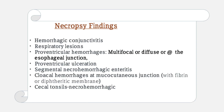Necropsy findings include: hemorrhagic conjunctivitis, respiratory lesions, proventricular hemorrhages, multifocal or diffuse proventricular ulceration at the esophageal junction, pulmonary hemorrhage, fibrin or diphtheritic membranes at the mucocutaneous junction, and cecal tonsil hemorrhages.